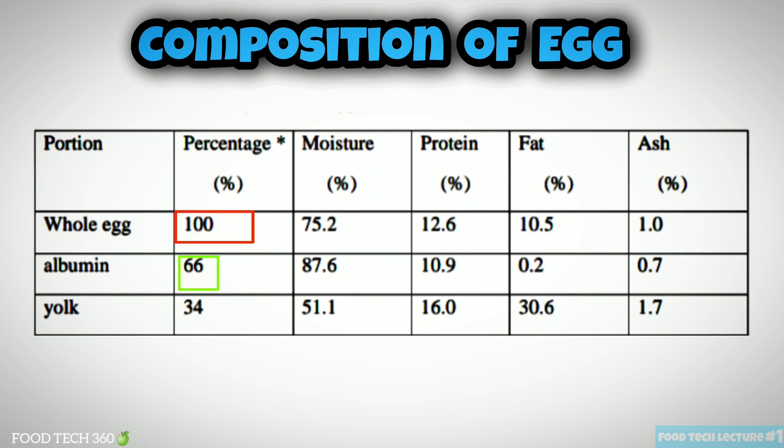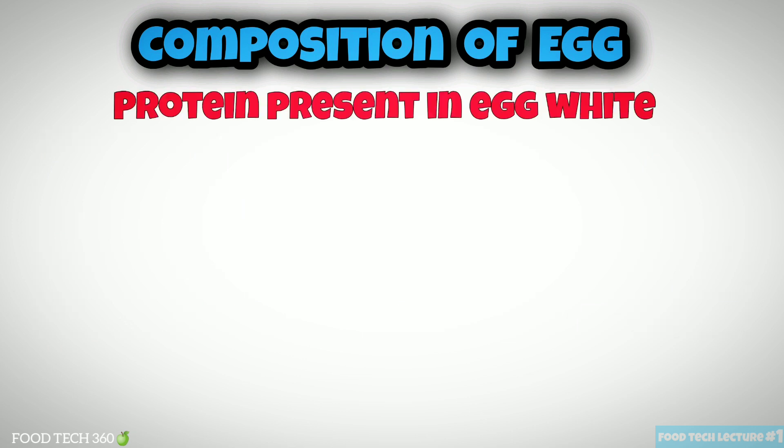Now let's see the composition of eggs by analyzing this table. From 100% of the whole egg, 66% is albumin and the remaining 34% is yolk. Albumin is high in moisture at 87.6%. The yolk is high in protein, fat, and ash — it contains 16% protein, 30.6% fat, and 1.7% ash. Now let's see some of the proteins present in egg white.